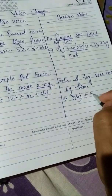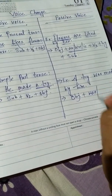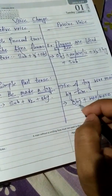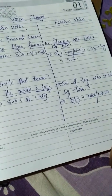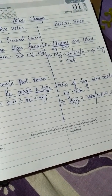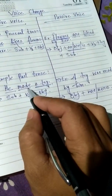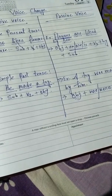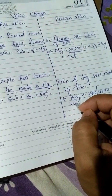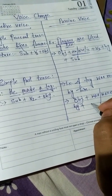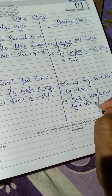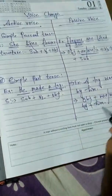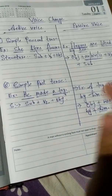The structure for simple past passive is: first the object 'a toy', then the helping verb 'was' or 'were' depending on whether the object is singular or plural, then the past participle form of the verb — for 'make', all forms are 'make, made, made' — then 'by', and then 'he' changes into 'him'.